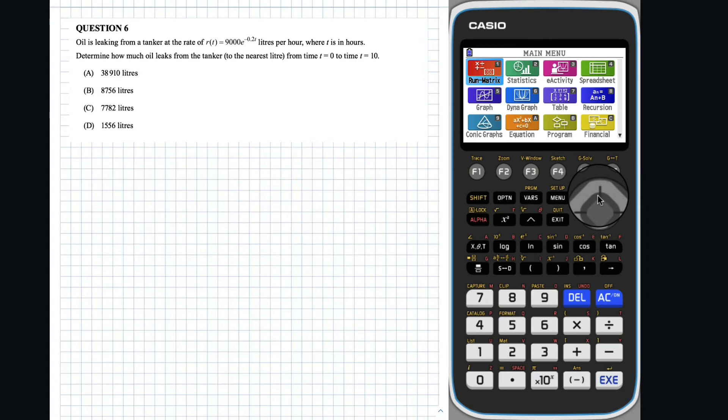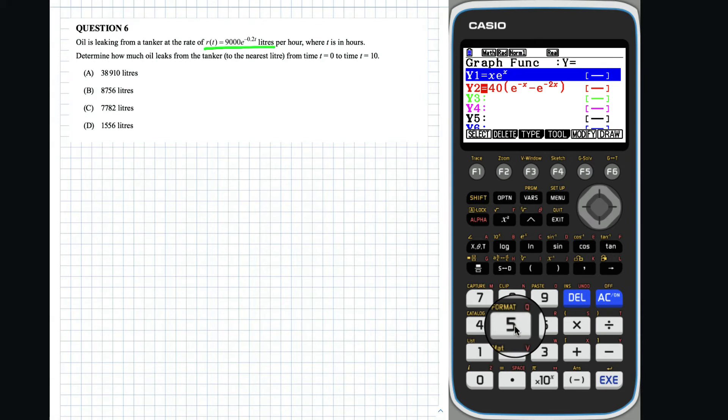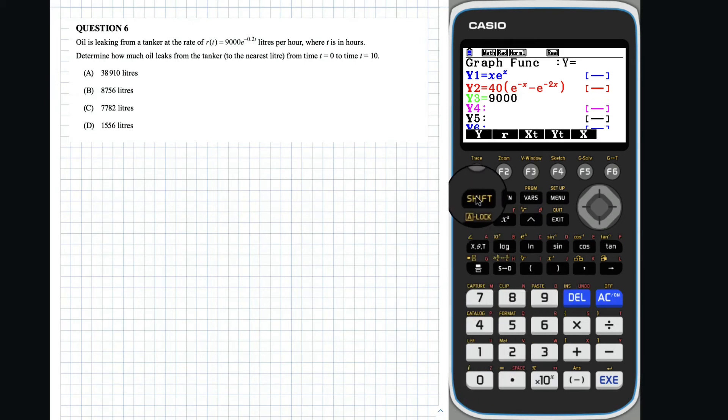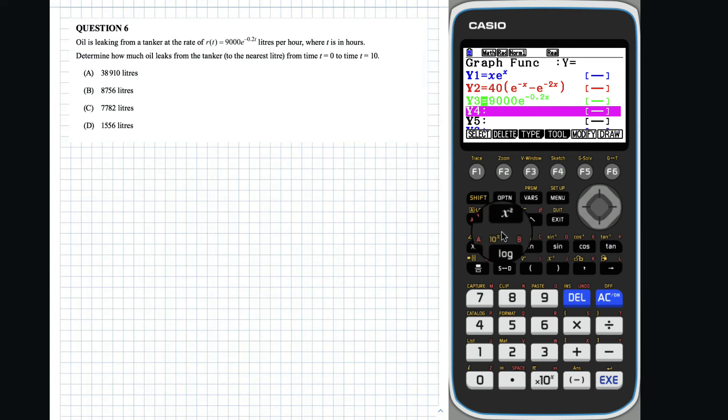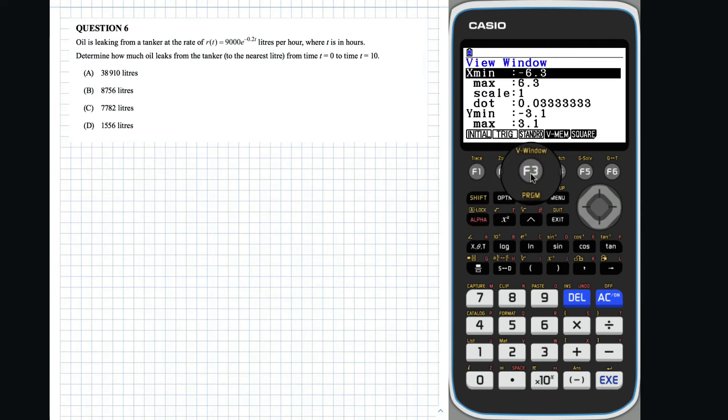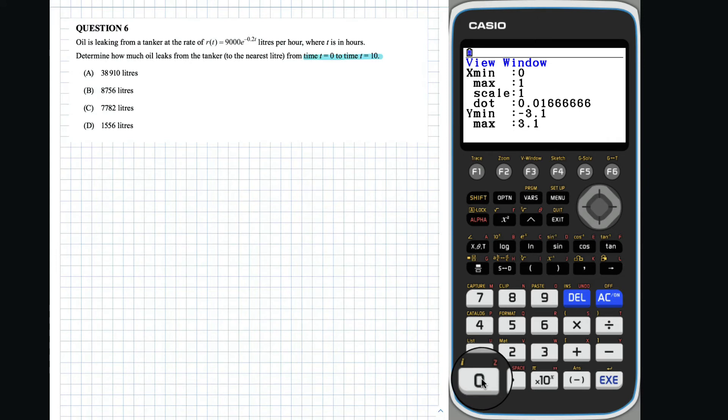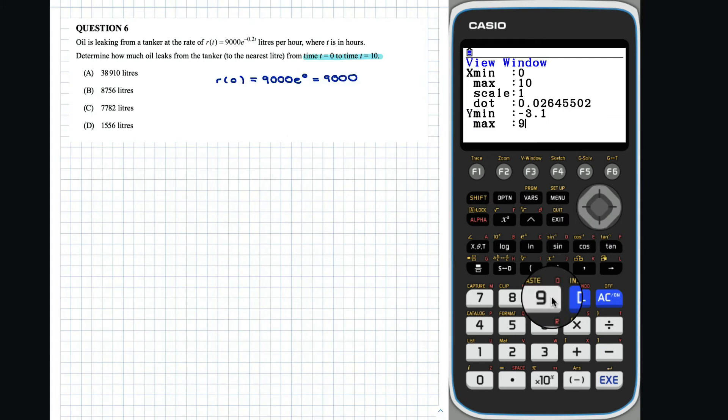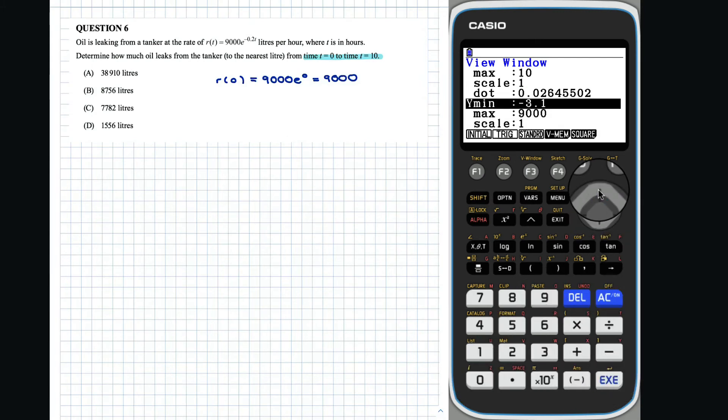Question 6: First, we can draw the graph of r of t. In the question, we are told that t is between 0 and 10, so we can use this to set the domain of our graph. If we initially calculate how much oil is in the tank, we can set our y-max as 9,000 and our y-min as 0.